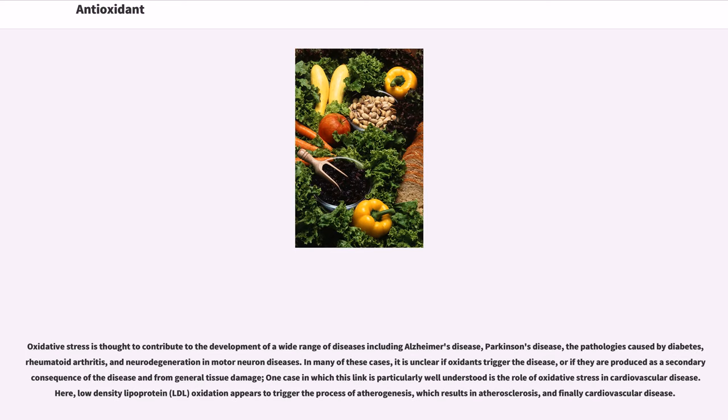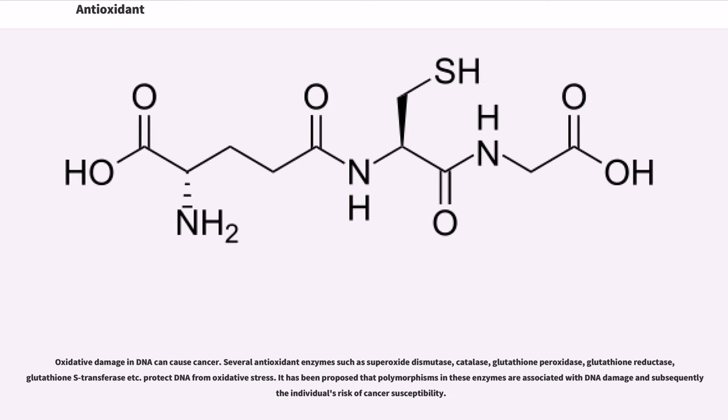Oxidative stress is thought to contribute to the development of a wide range of diseases including Alzheimer's disease, Parkinson's disease, the pathologies caused by diabetes, rheumatoid arthritis, and neurodegeneration in motor neuron diseases. In many of these cases, it is unclear if oxidants trigger the disease, or if they are produced as a secondary consequence of the disease and from general tissue damage. One case in which this link is particularly well understood is the role of oxidative stress in cardiovascular disease. Here, low-density lipoprotein (LDL) oxidation appears to trigger the process of atherogenesis, which results in atherosclerosis, and finally cardiovascular disease. Oxidative damage in DNA can cause cancer.